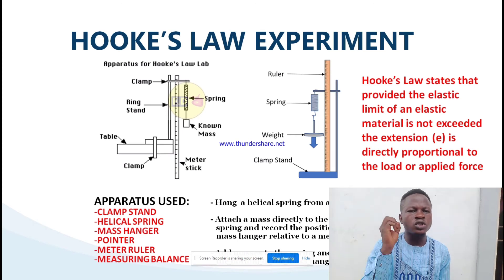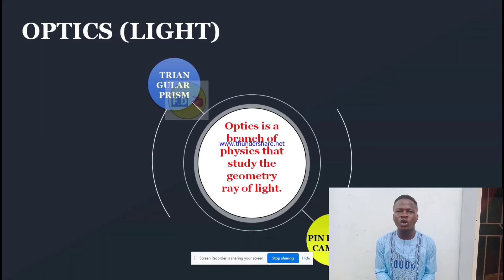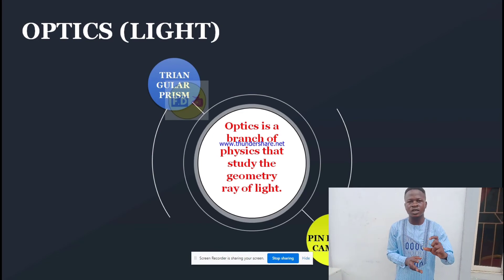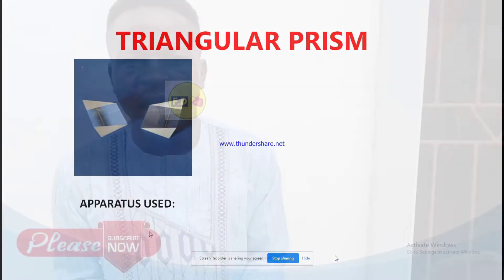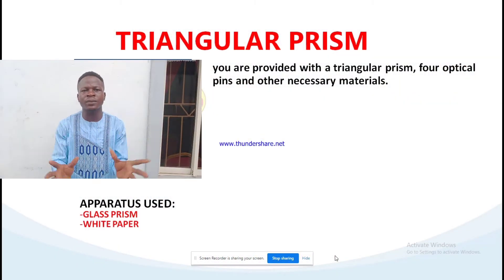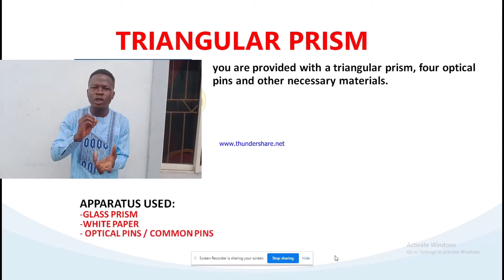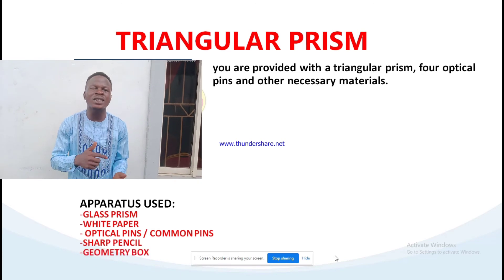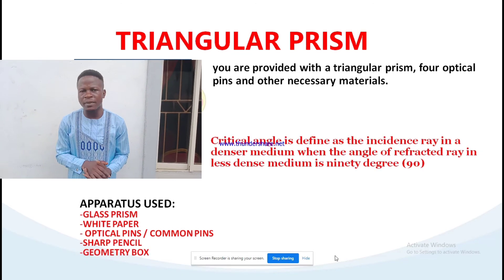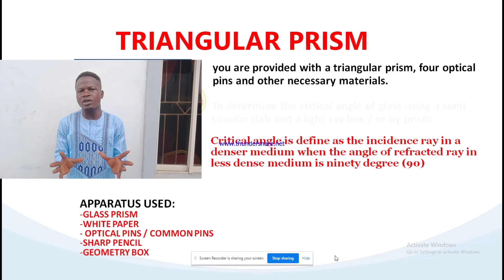The second topic is optics. Optics is the aspect of physics that deals with the geometry of light. Light is an electromagnetic wave that does not require a material medium for propagation, and it is a form of energy. I'll be talking about the triangular prism experiment and the pinhole camera box experiment. Check my description box below for the links to these particular experiments to watch how the practical aspect looks.